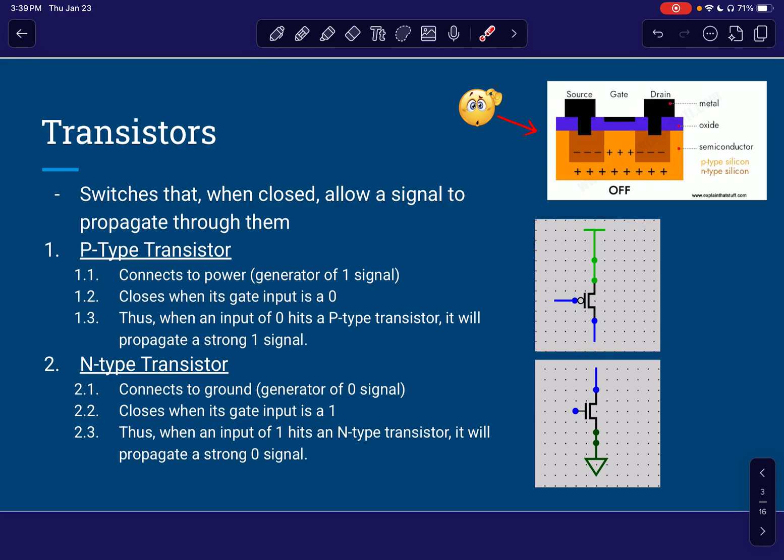And so with our transistors, we have two main types. The first one is the P-type transistor. And the P-type transistor connects to power. So that's a good little mental note I like to make. Our mental connection is P goes to power, all right? And the power is this thing up here that is going to be the generator of the one signals in our computer and ones being the trues. So the power up here and the P-type can only connect to power.